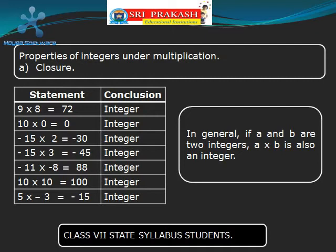Now let us take 2 integers 5 and minus 3 and multiply. The product will be minus 15, which is an integer. So what we concluded: in general, if A and B are two integers, A into B is also an integer.